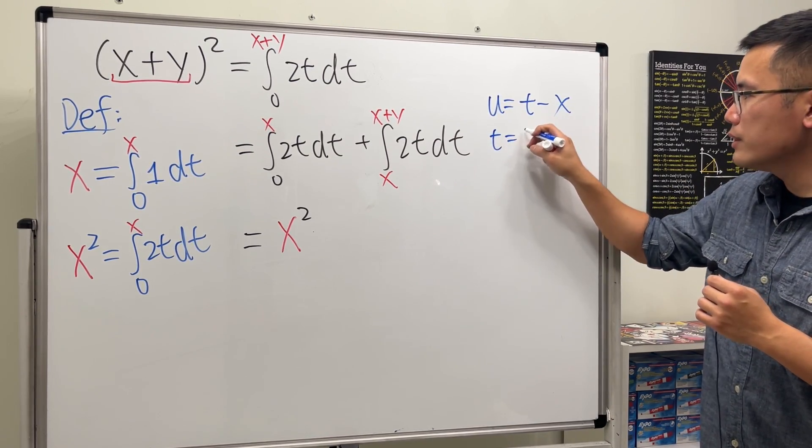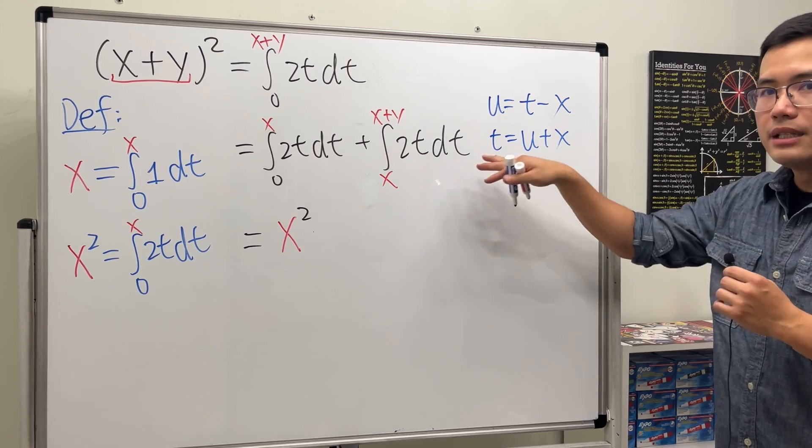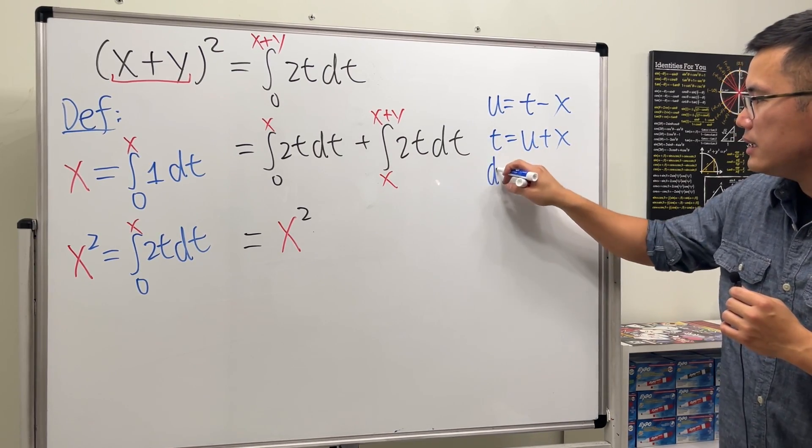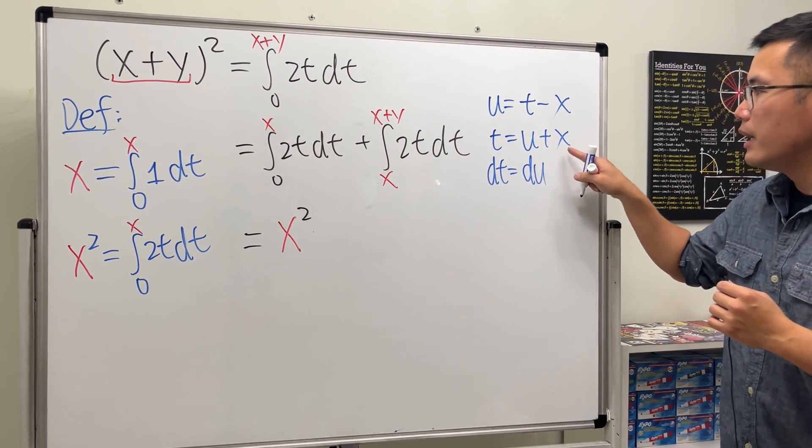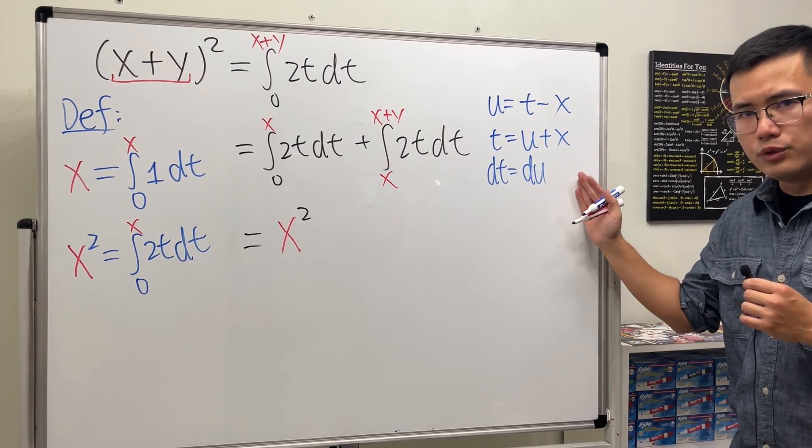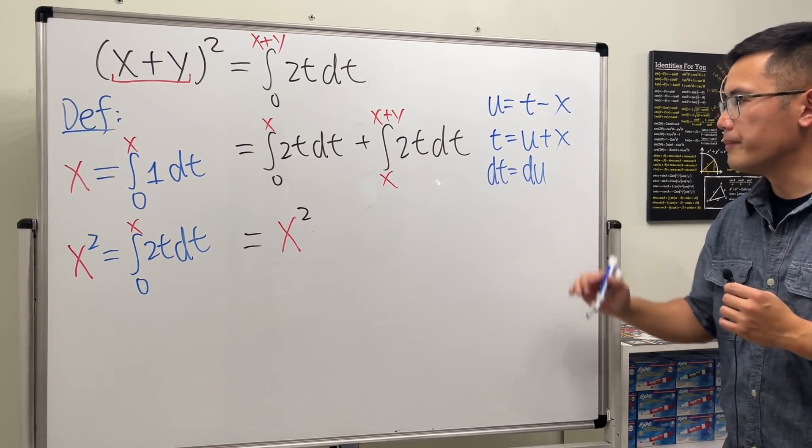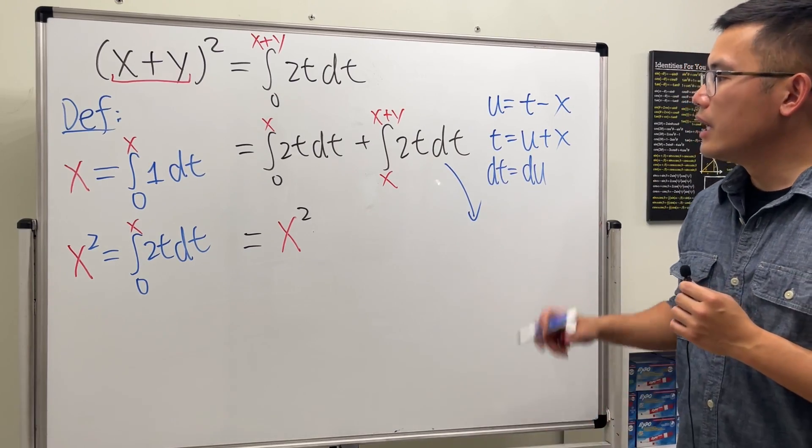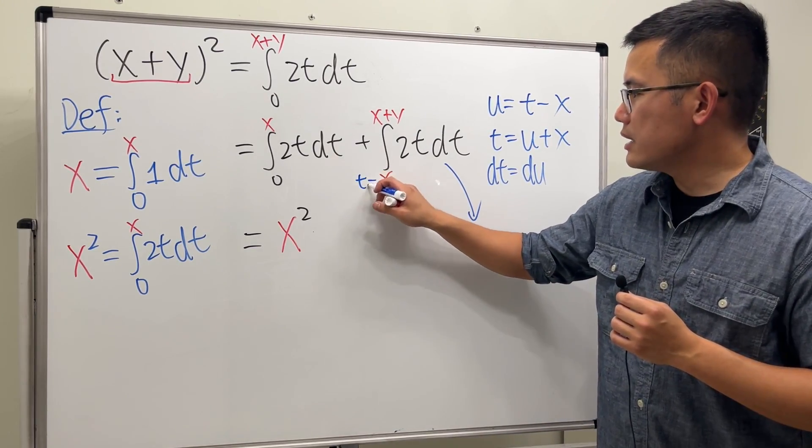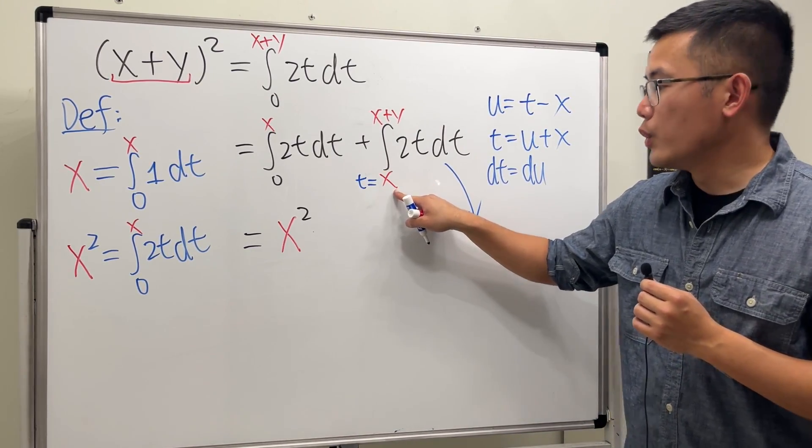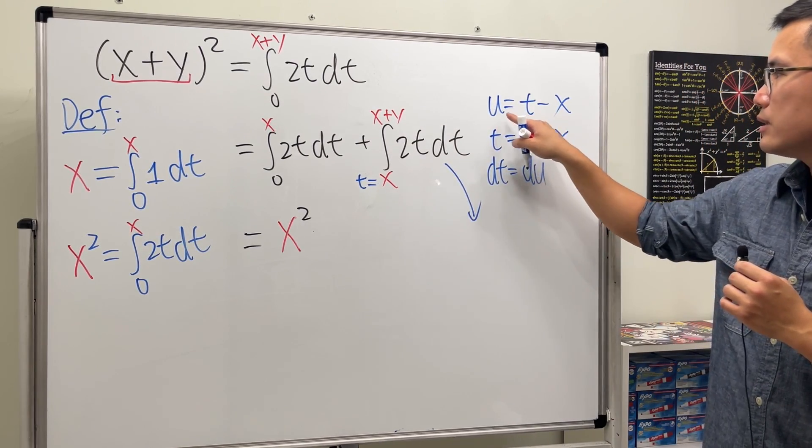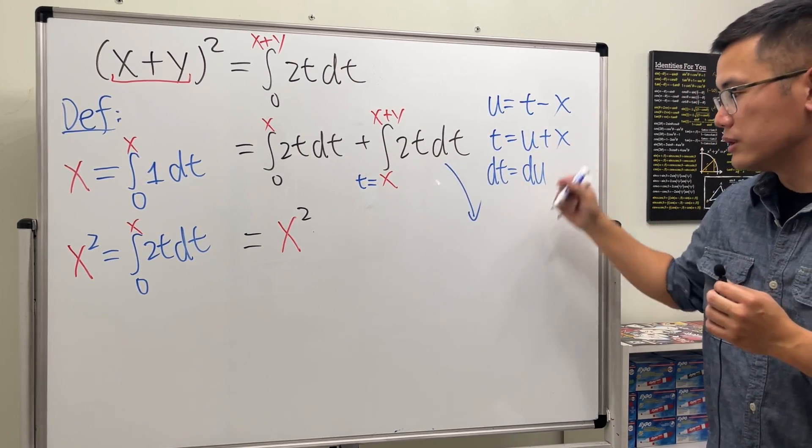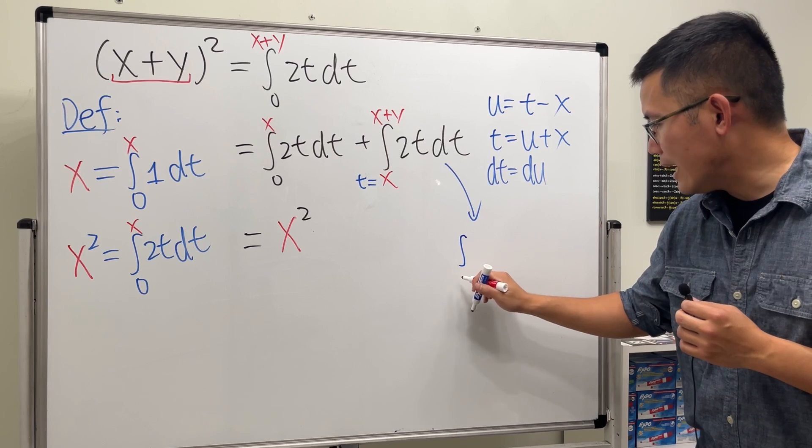And now let's move this to the other side, so we get t equals u plus x. Differentiate this, we will get dt equals du. The derivative of x in here will be zero because x is like a constant here. Now we can take this and then fix it and see what we get. Keep in mind though, this is t equals x, we will have to put it here, so that means u will be x minus x, which is zero, so we will have u goes to be zero first.